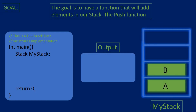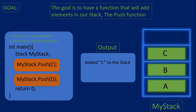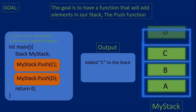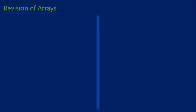Say we have an example stack called myStack and we already have items or elements A and B, and we want to add more items. We'll call the push function that will add an item C, and we can call it again to add another item D. So let's create this function.